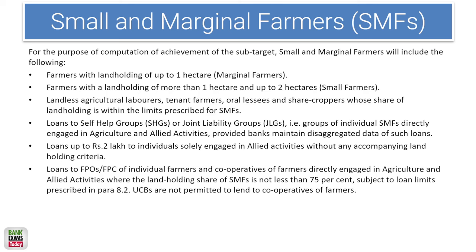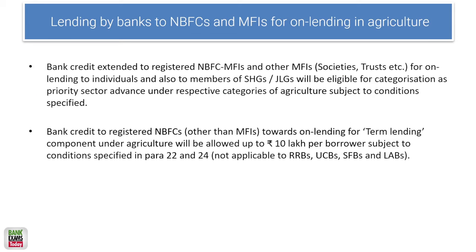Definition of small and marginal farmers: a marginal farmer has a land holding of up to one hectare; a small farmer has a land holding of more than one hectare but less than two hectares. Also included: landless agricultural laborers, loans to self-help groups or joint liability groups, loans of up to 2 lakh to individuals engaged in allied activities of agriculture, and loans to FPOs and FPCs.